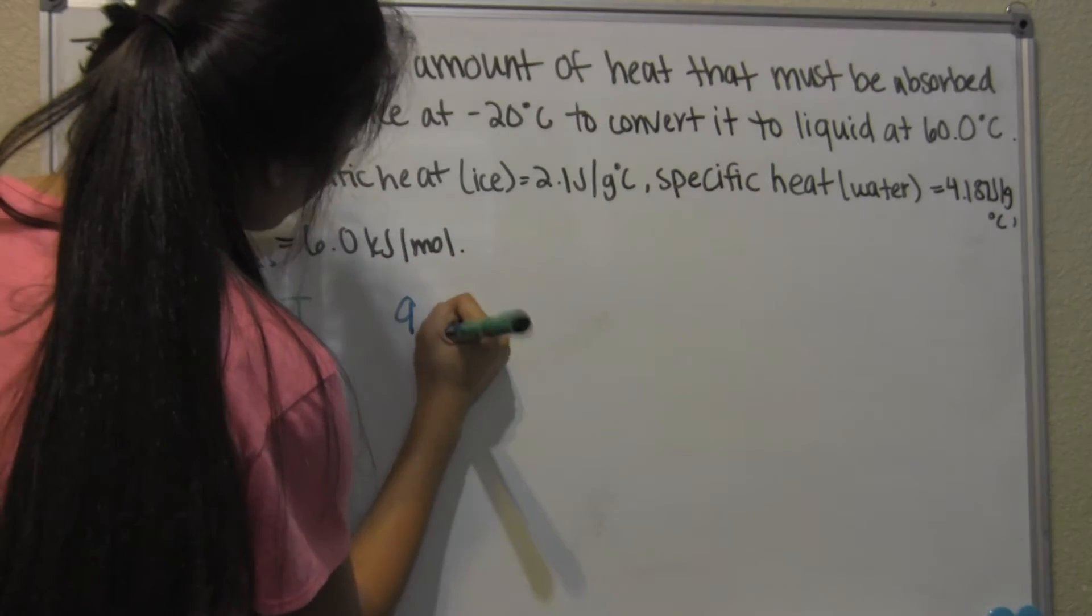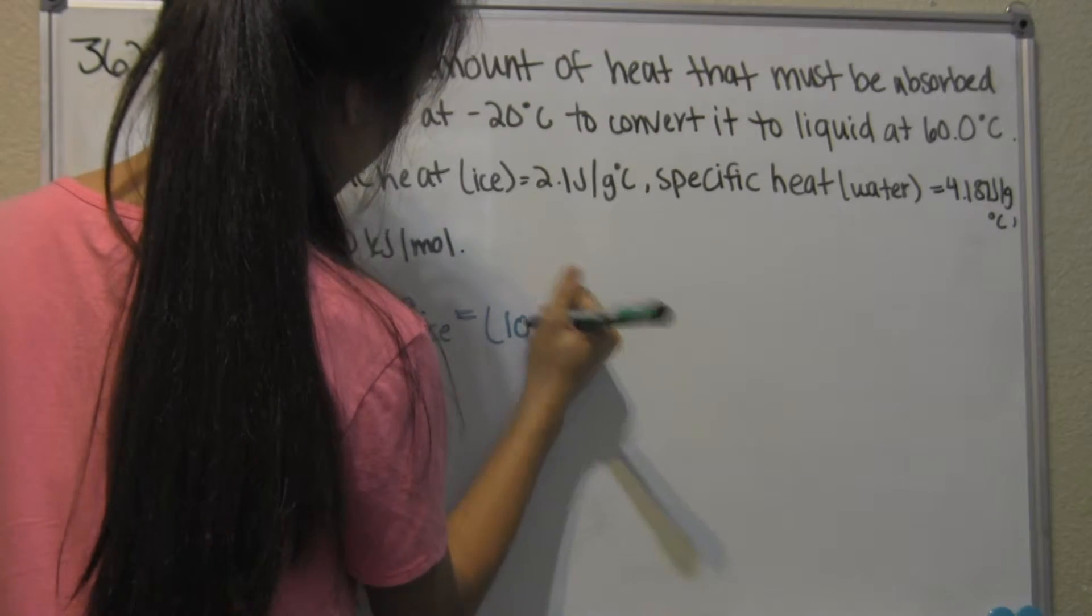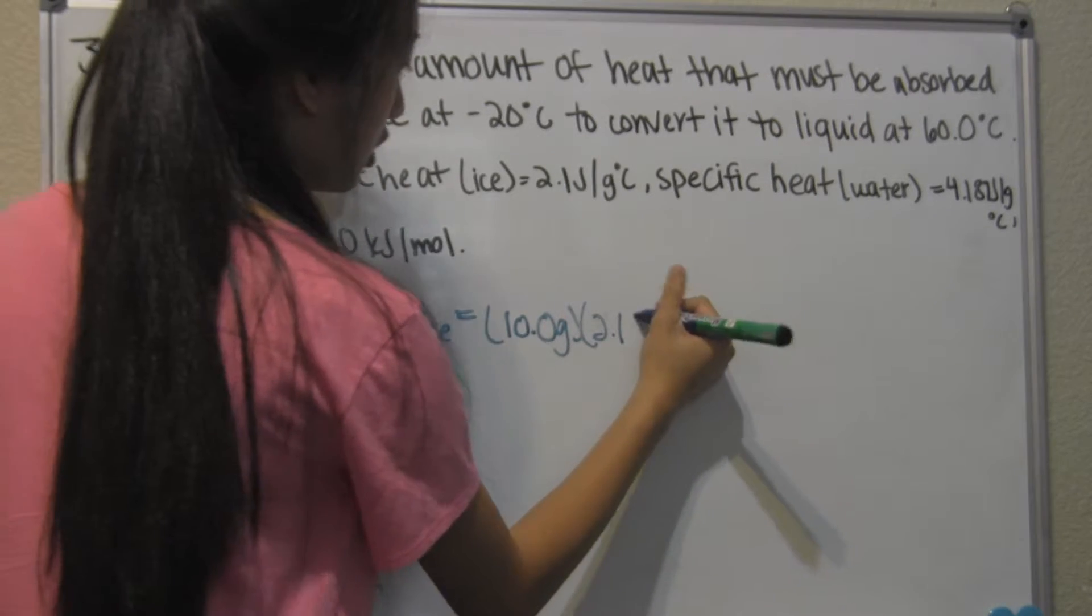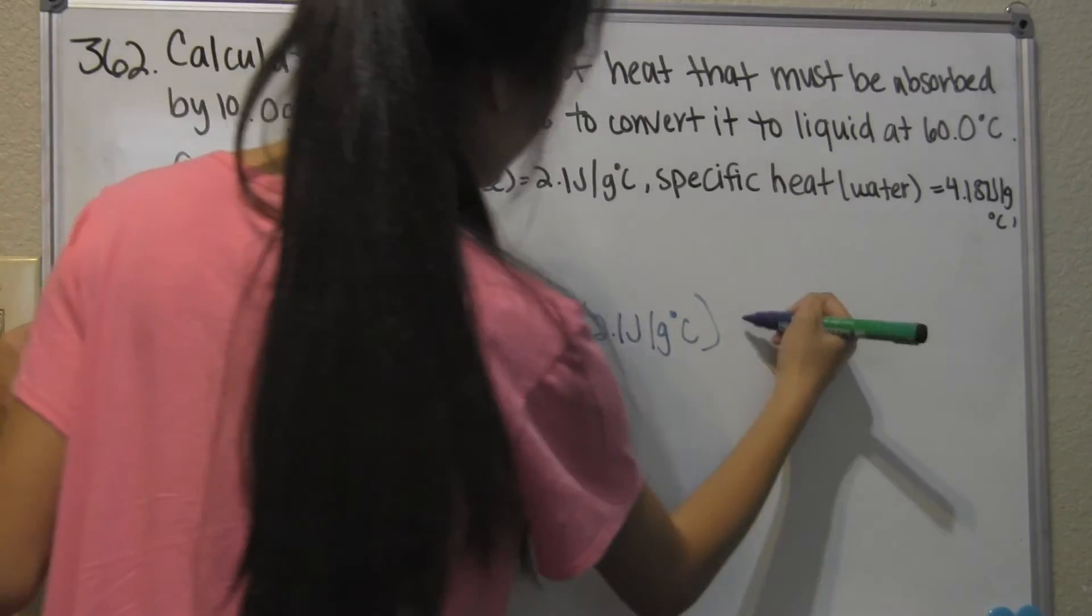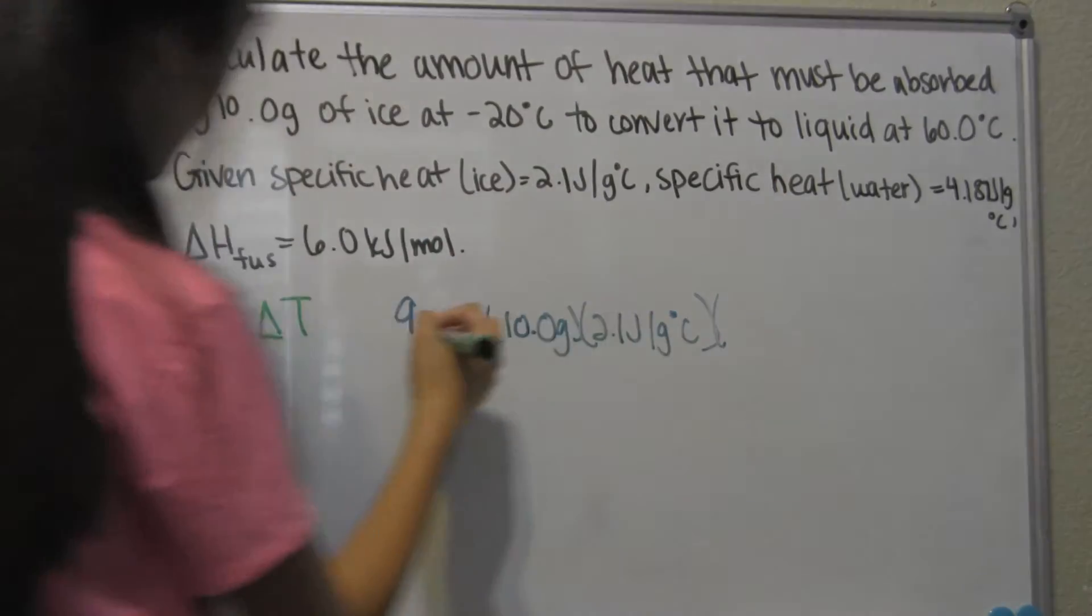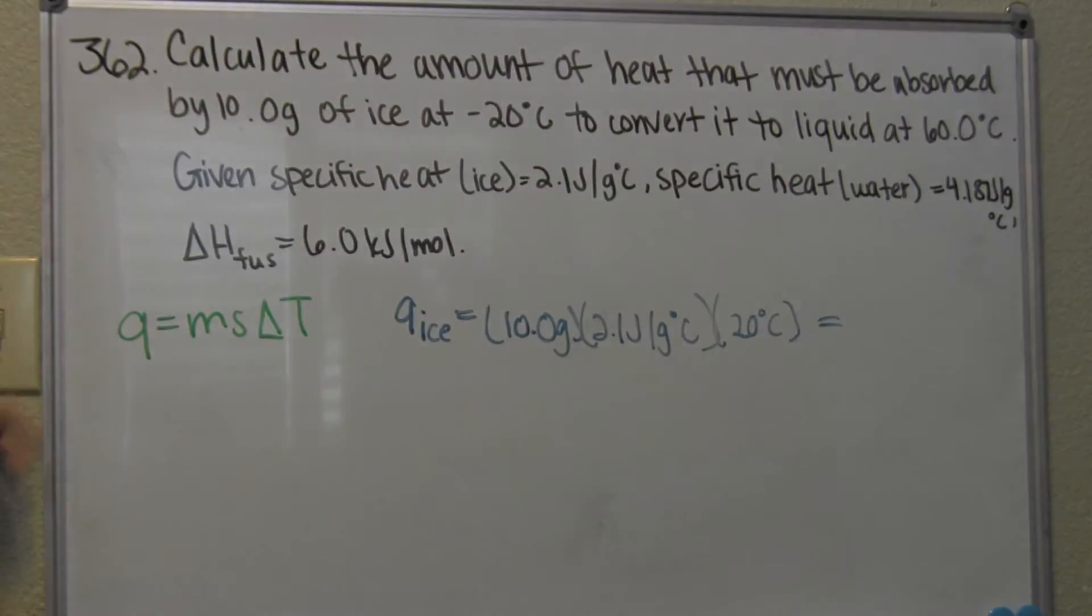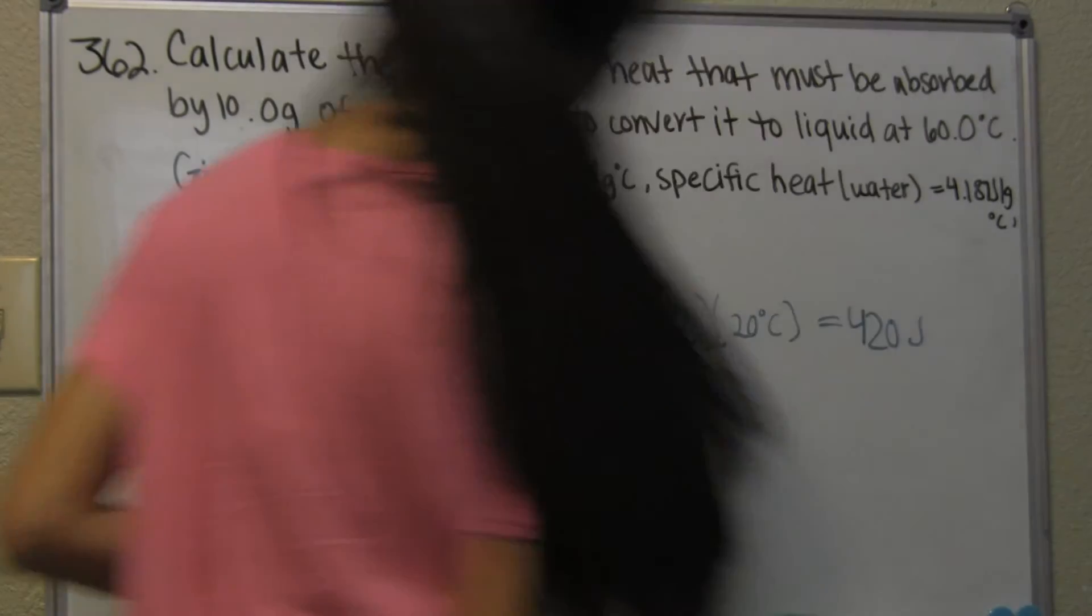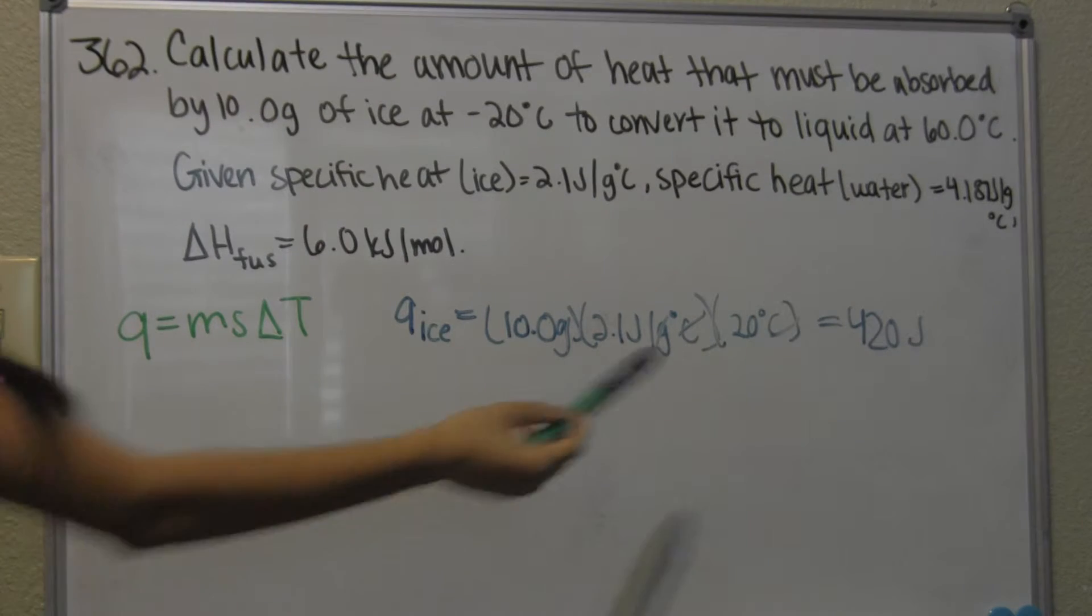Q of ice is equal to M, which is 10 grams, times S, which is 2.1 joules per gram Celsius, and the temperature, which is going to be 20 degrees Celsius. You end up getting 420 joules, because grams cancels with grams, and Celsius cancels with Celsius, and you're left with joules.